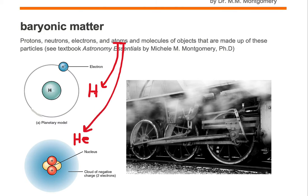The hydrogen atom has a proton in the nucleus — just a single proton — and it has an electron outside the nucleus.